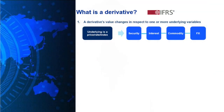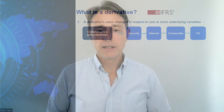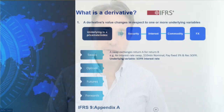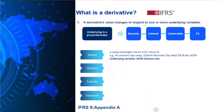That underlying variable could be a price — like a stock or a bond price — an interest rate like SOFR, BBSW, LIBOR, or SONIA, a commodity price, or an FX rate. Let's have a look at the most common types of derivatives: swaps, options, futures, and forwards.